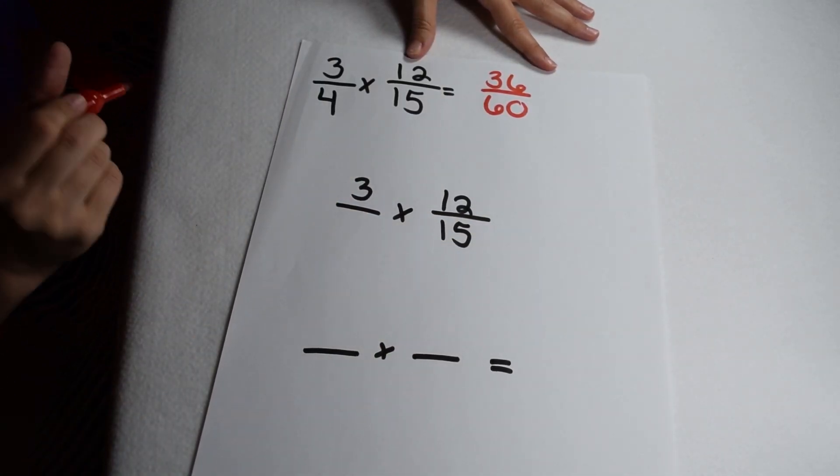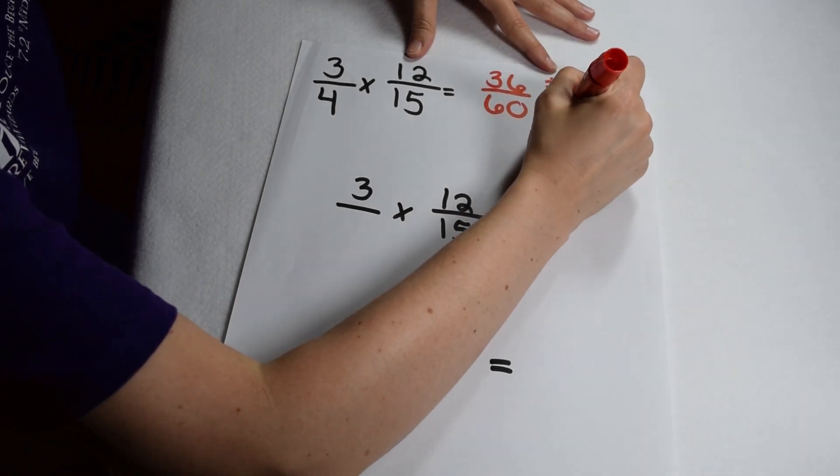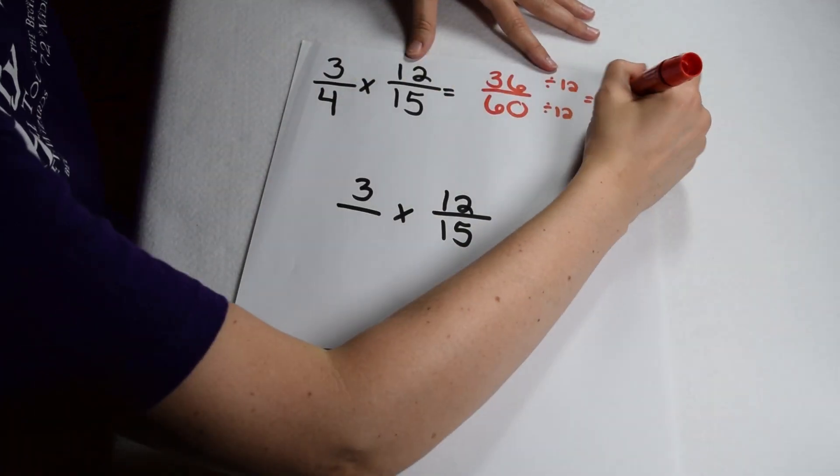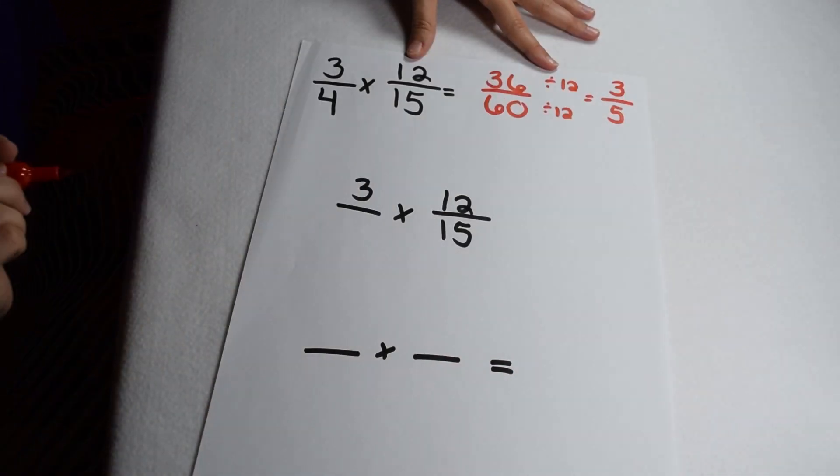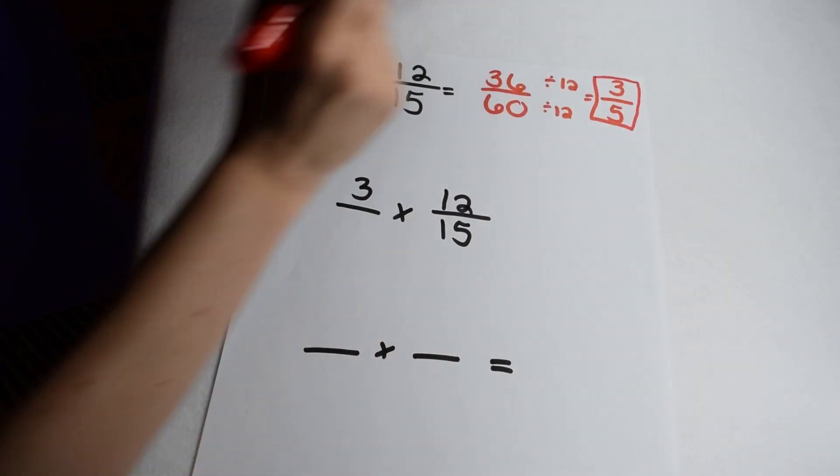36 and 60 have many common factors, but if I went through, I would find that their greatest common factor is 12. So I'm just going to divide both 36 and 60 by 12. 36 divided by 12 gives me 3. 60 divided by 12 gives me 5. So in lowest terms, my answer is going to be three fifths.